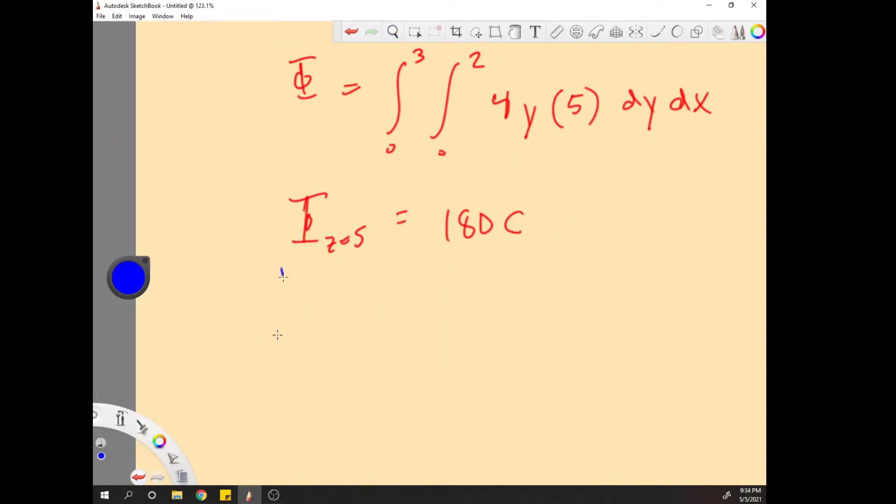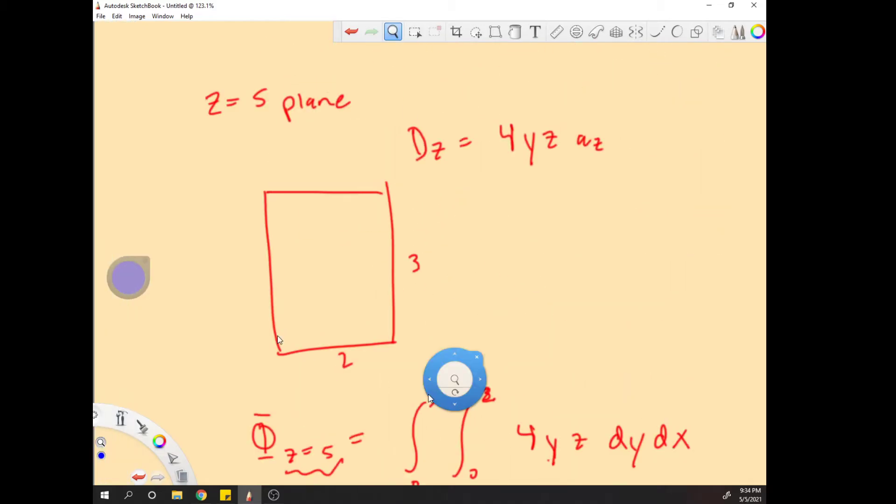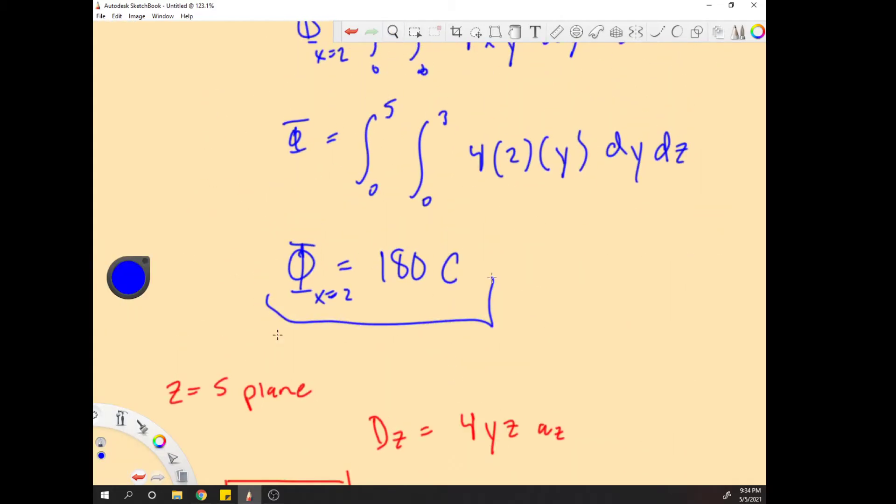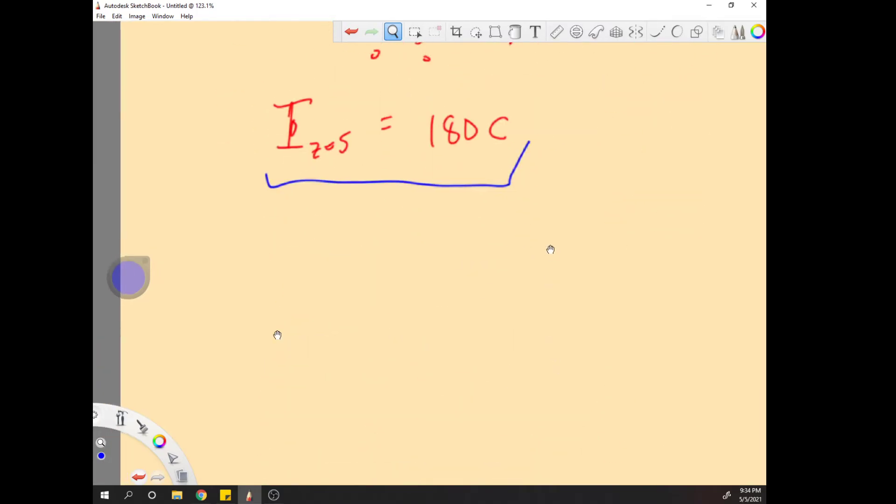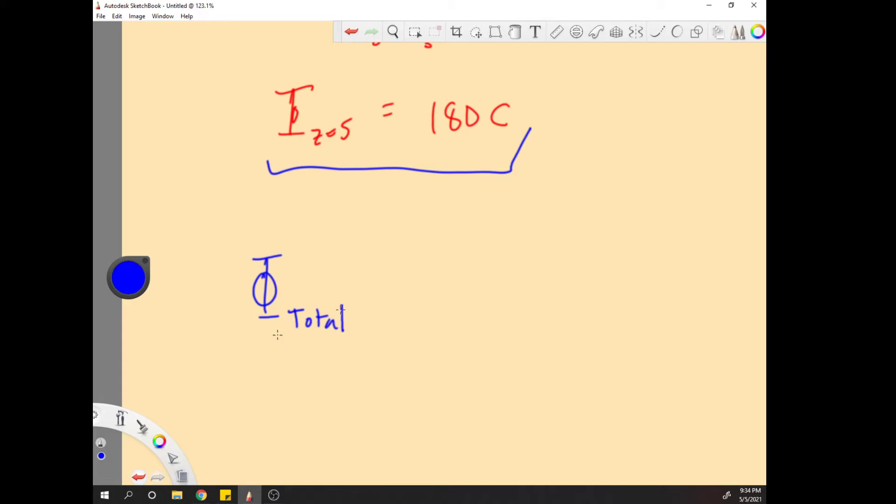So now final part, we add this. Phi x equal to two plus phi z equal to five. Phi total is equal to 360 coulombs. There you go, hope that helps, goodbye.